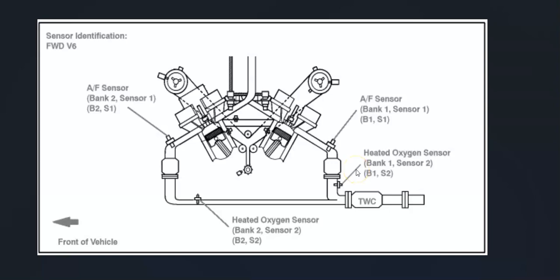For example, this is a 2007 Camry with 3.5 liter V6. As you can see, bank one sensor two is right here and it's located after the catalytic converter.